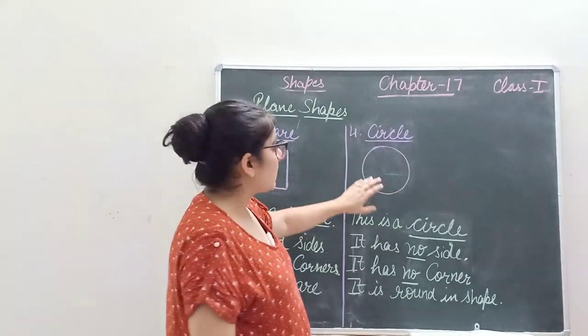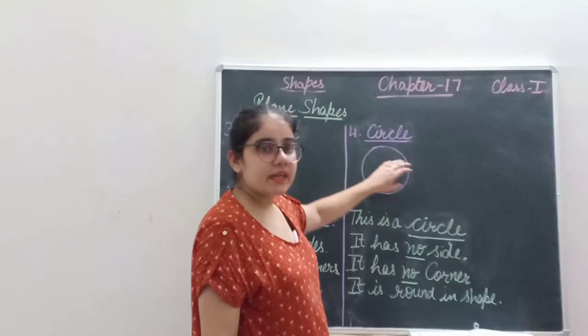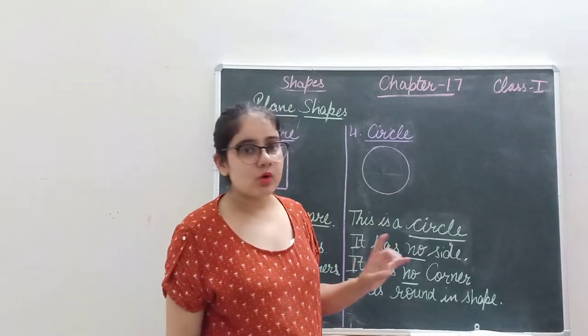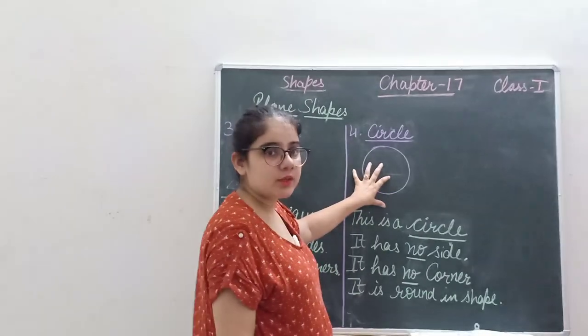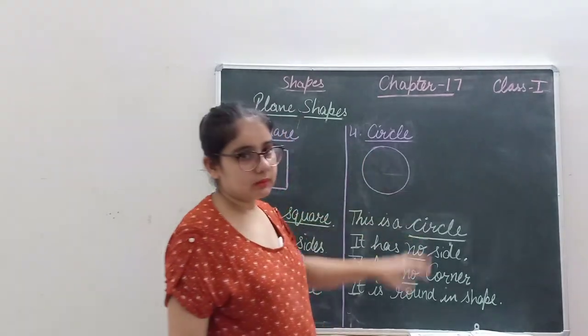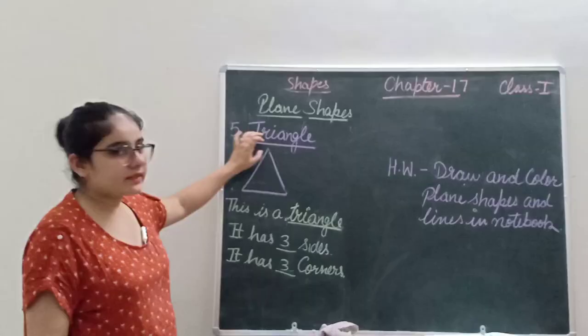That is circle. This is round in shape. It has no side and no corner. You can see there is no side and no corner in circle. Now come to last shape, that is triangle.